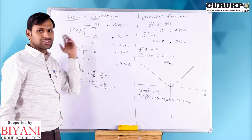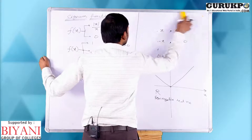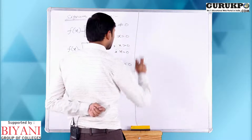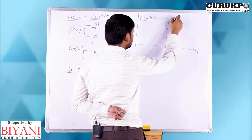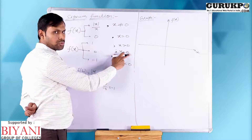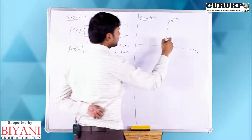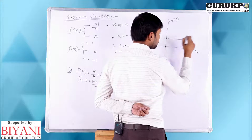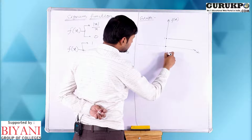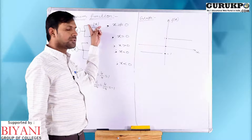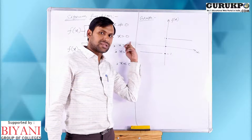We design the graph of the signum function with axes x and f(x). When x is 0, f(x) is 0. When x is more than 0, f(x) is always 1 — a horizontal line at 1 for the positive side. When x is negative, f(x) is minus 1. So the graph has three distinct parts: a point at the origin, a horizontal line at 1 for positive x, and a horizontal line at minus 1 for negative x.